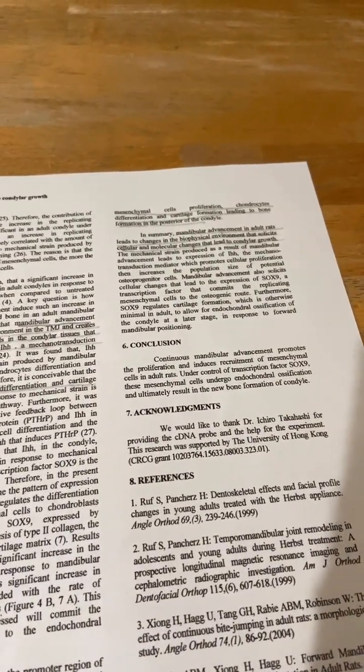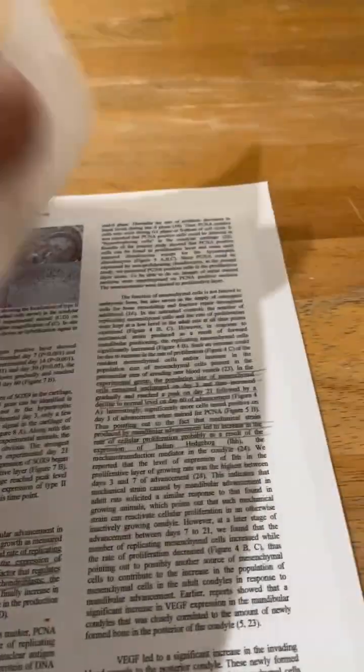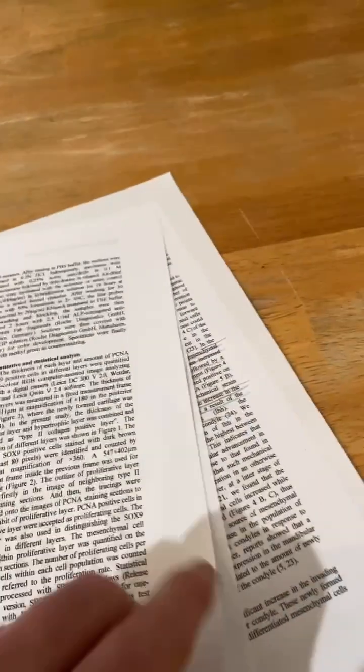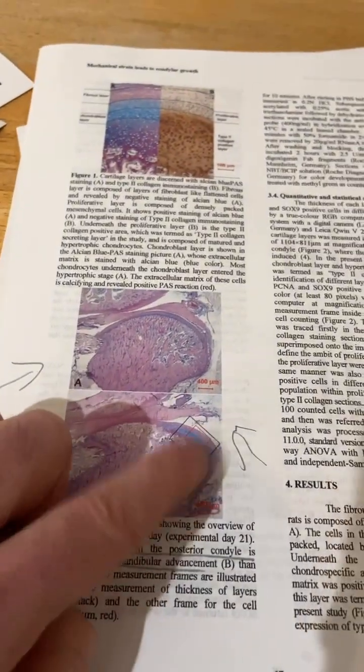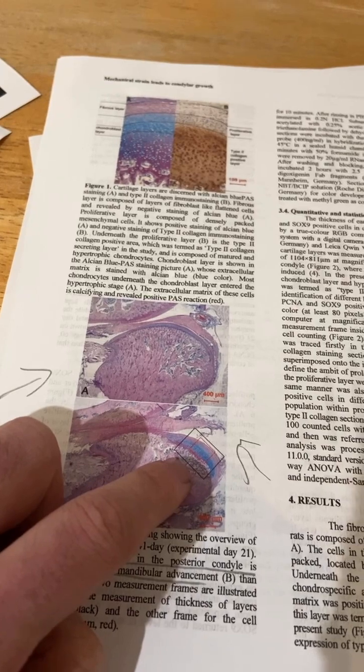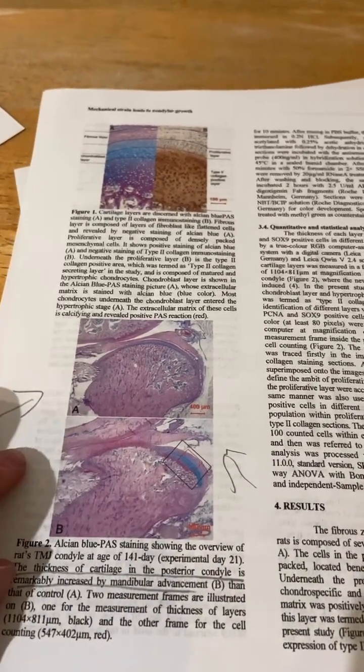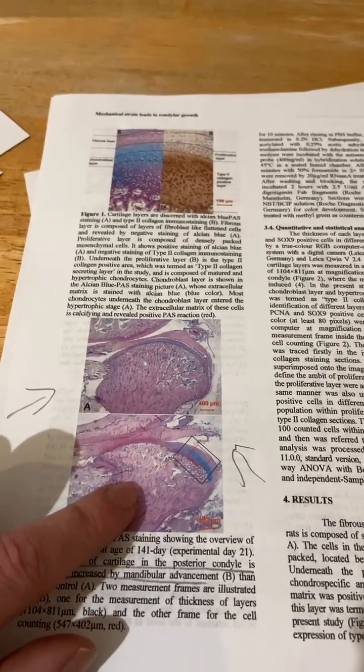There are other studies that also show that Herbst appliances can lead to new jaw growth. But what's unique about this study is this picture right here, which is just like amazing. That's just like the smoking gun that just drives me that height increase is possible.